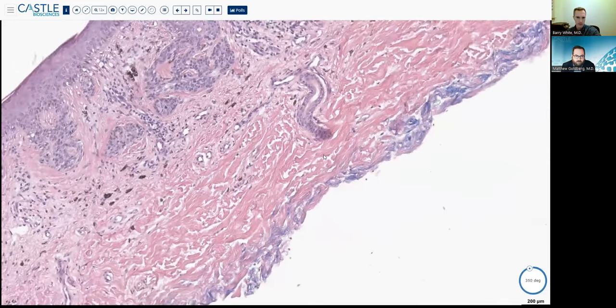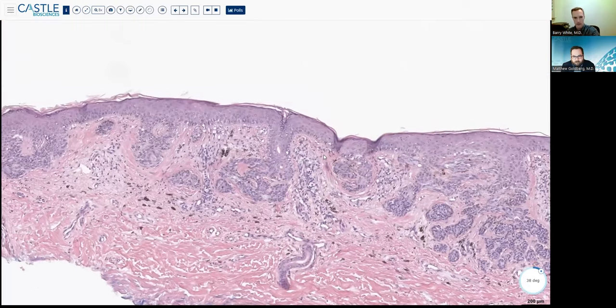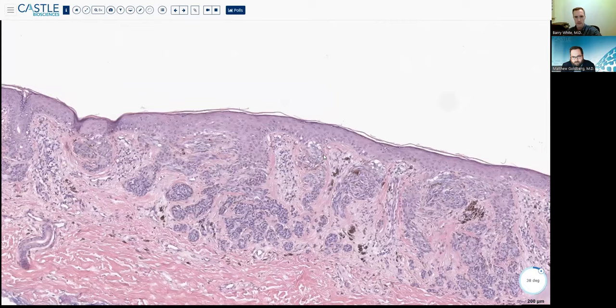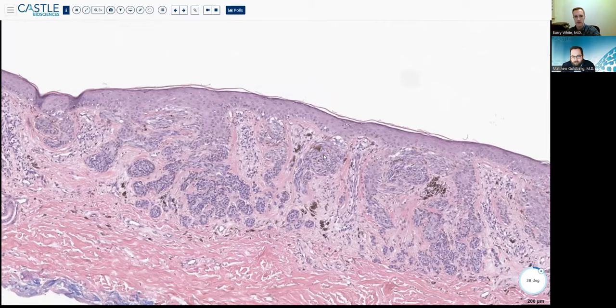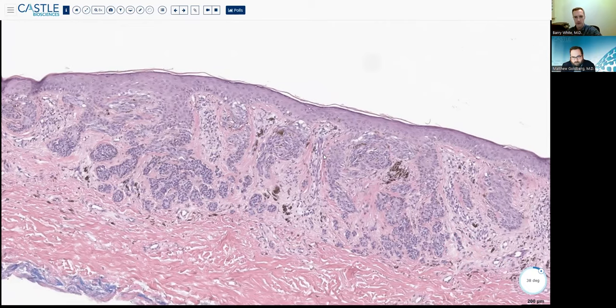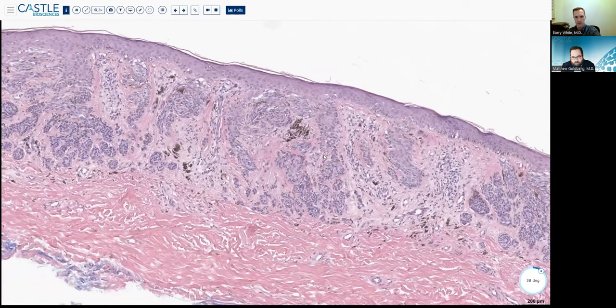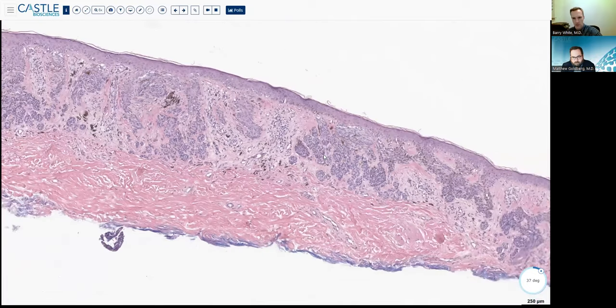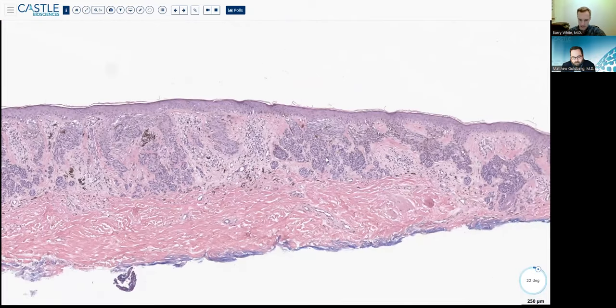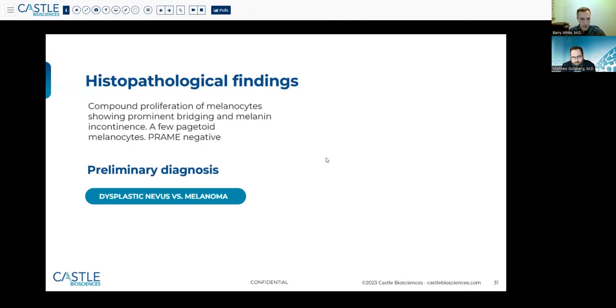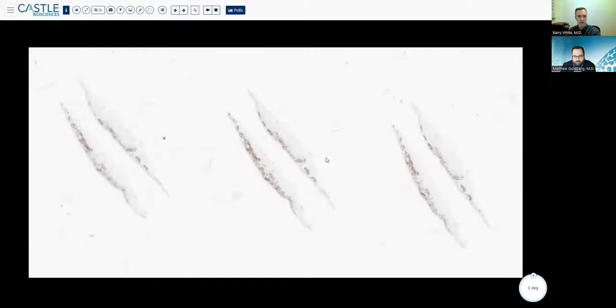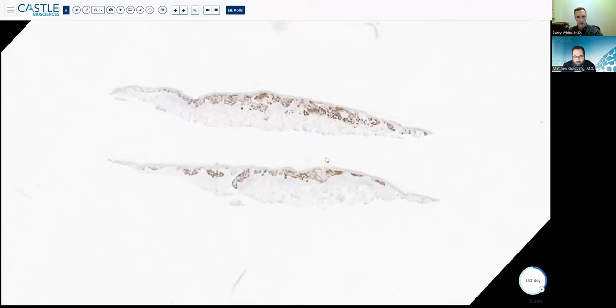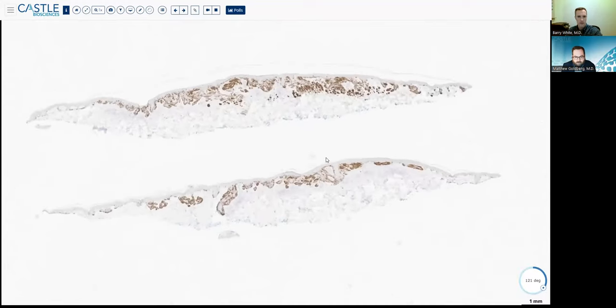You can see while it's mostly nested, there's not a ton of other features. There's not a ton of pagetoid spread that we can see by this. But overall, just being from an elderly individual, we decided to go ahead and order Melan-A, PRAME and try to give us a little better sense of what's going on.